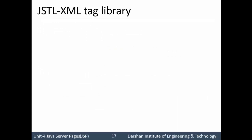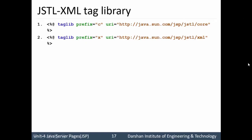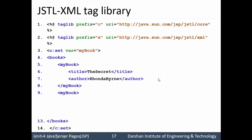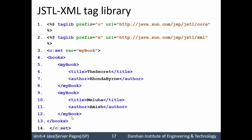Now let us demonstrate these XML tags with the help of one program. The first line includes the core tag library. The second line includes the XML library with prefix C and X respectively. In line 3, I am setting one variable with the help of the core tag library and the name of the variable is my book. Within that I am writing one XML tag named books, with a sub-tag my book, containing title and author. There are two my book entries with different titles and author names. Now let us parse this XML tag with the help of JSTL XML tag library.